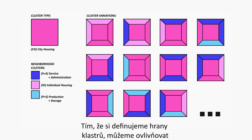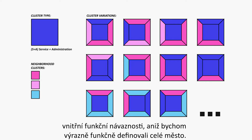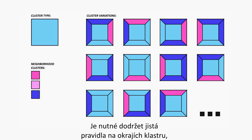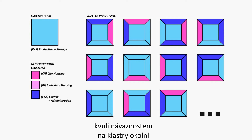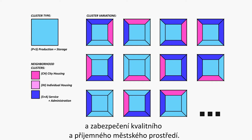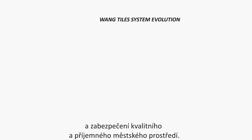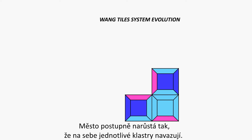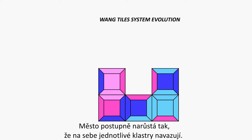By defining the edges of clusters, we can influence functional connections without significant over-defining of the whole city. It is necessary to keep certain rules on the edges of each cluster, because of connections with others and to secure a quality and pleasant urban environment.